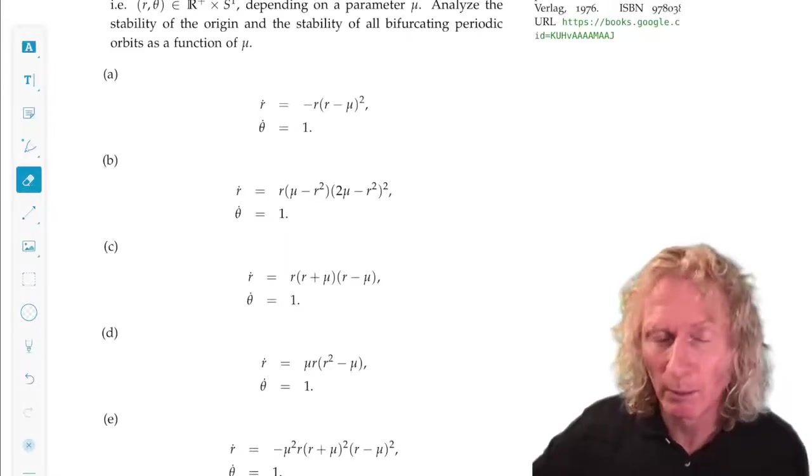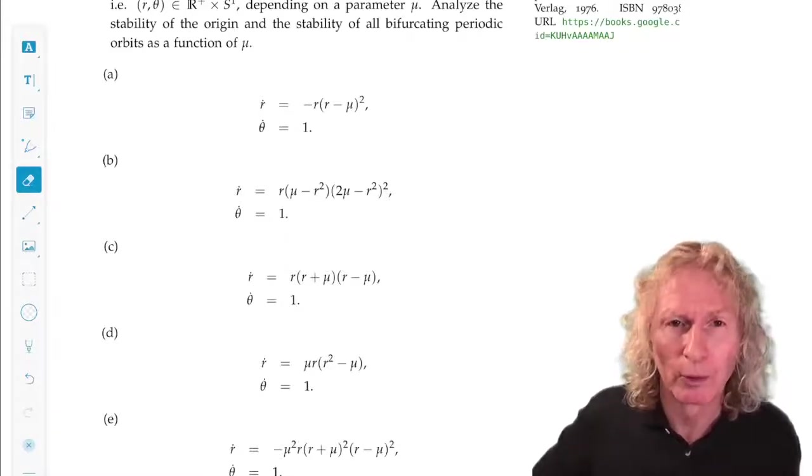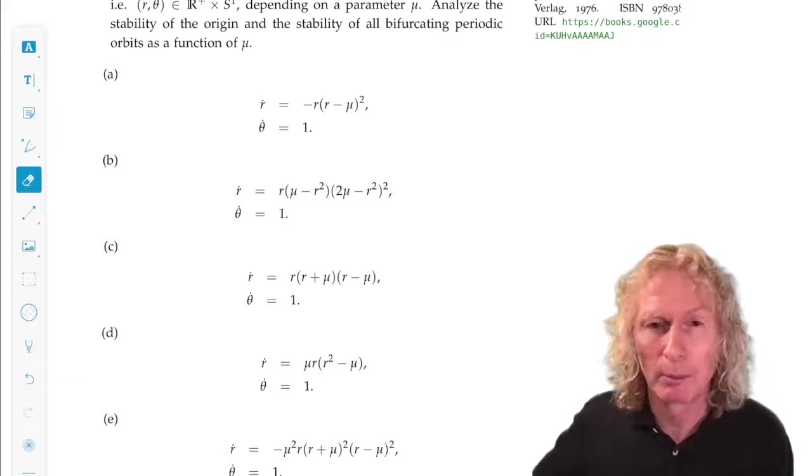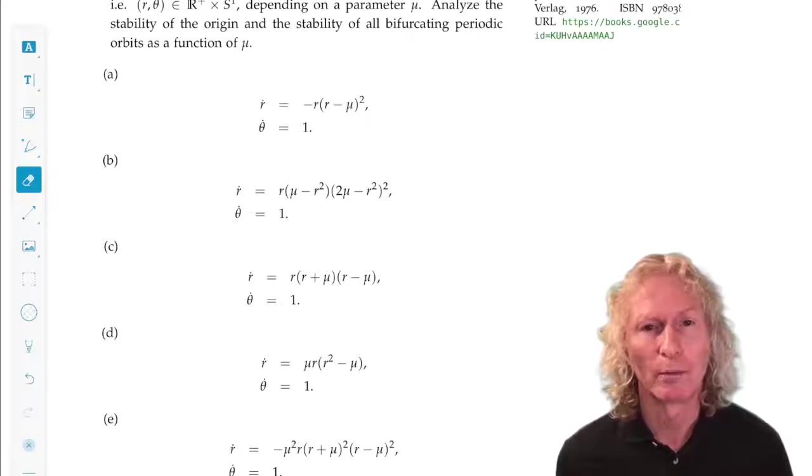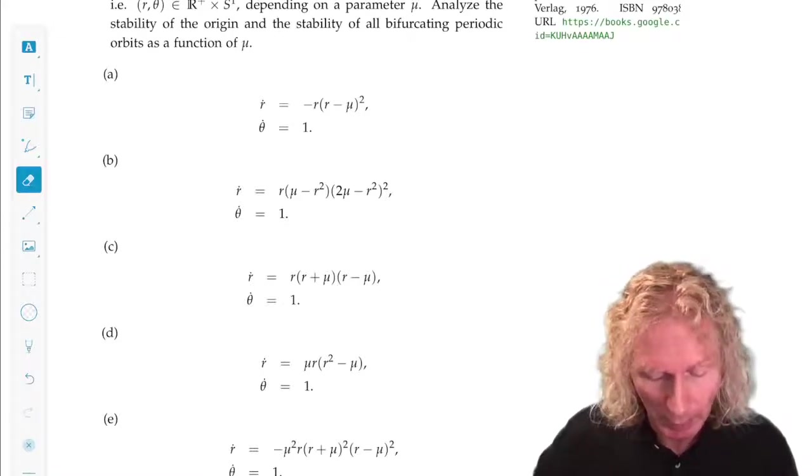And make sure you interpret polar coordinates correctly. R has to be greater than or equal to zero, and R positive is a periodic orbit. And some of these problems, you're going to get multiple periodic orbits.